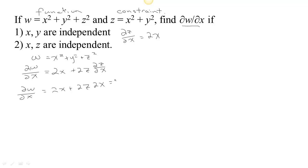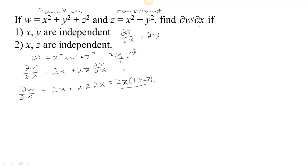So we have 2x times (1 plus 2z) if we factor out the 2x. In this case we said that x and y were independent — z was the dependent variable — and this was the result that we got.